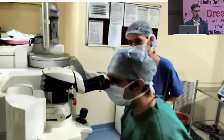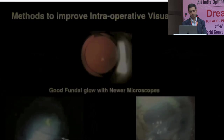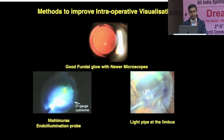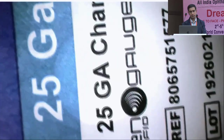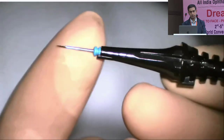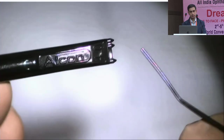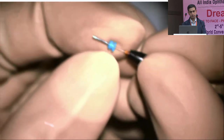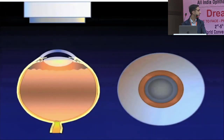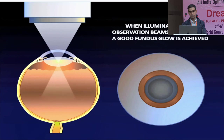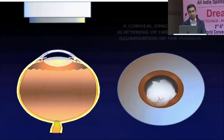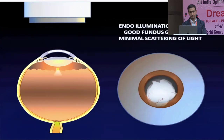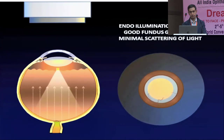No matter how many times you try to clean and align the microscope, the surgeon feels blind. Methods to improve visualization include coaxial illumination, a light pipe at the limbus, and an endo-illuminator through a limbal incision. We prefer using the 25-gauge chandelier light for visualization along with the constellation system. This demonstrates the 25-gauge rocker cannula with markings at the back that act as a caliper. The chandelier light is a self-retaining endo-illumination pipe that fits into the cannula and can be inserted through the pars plana route.